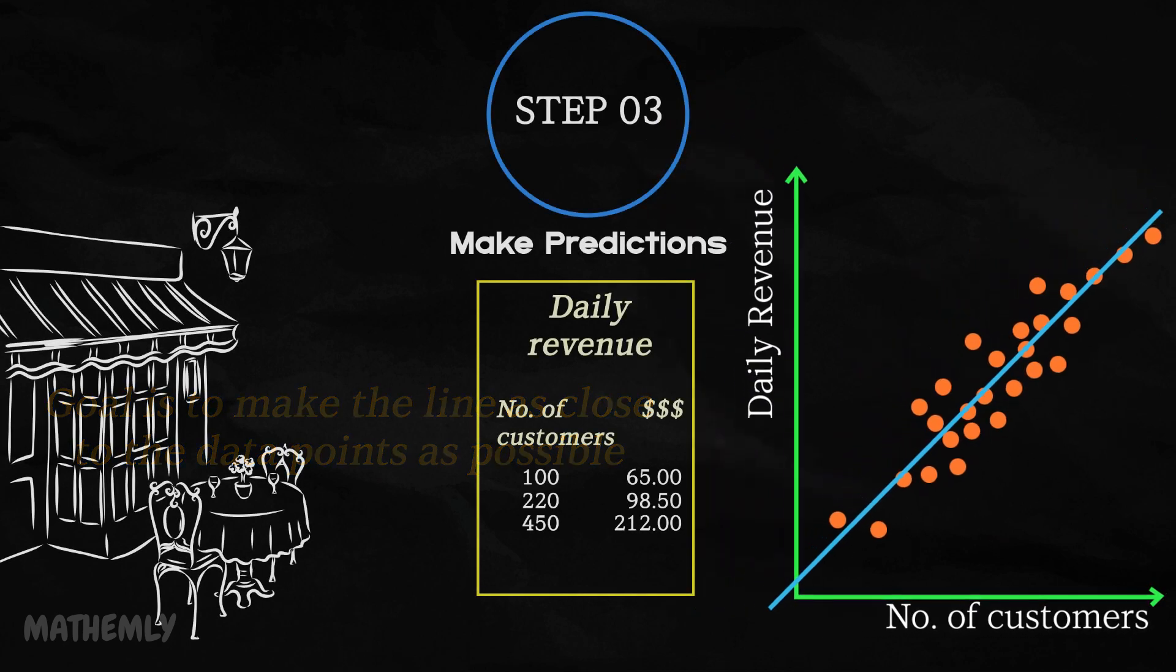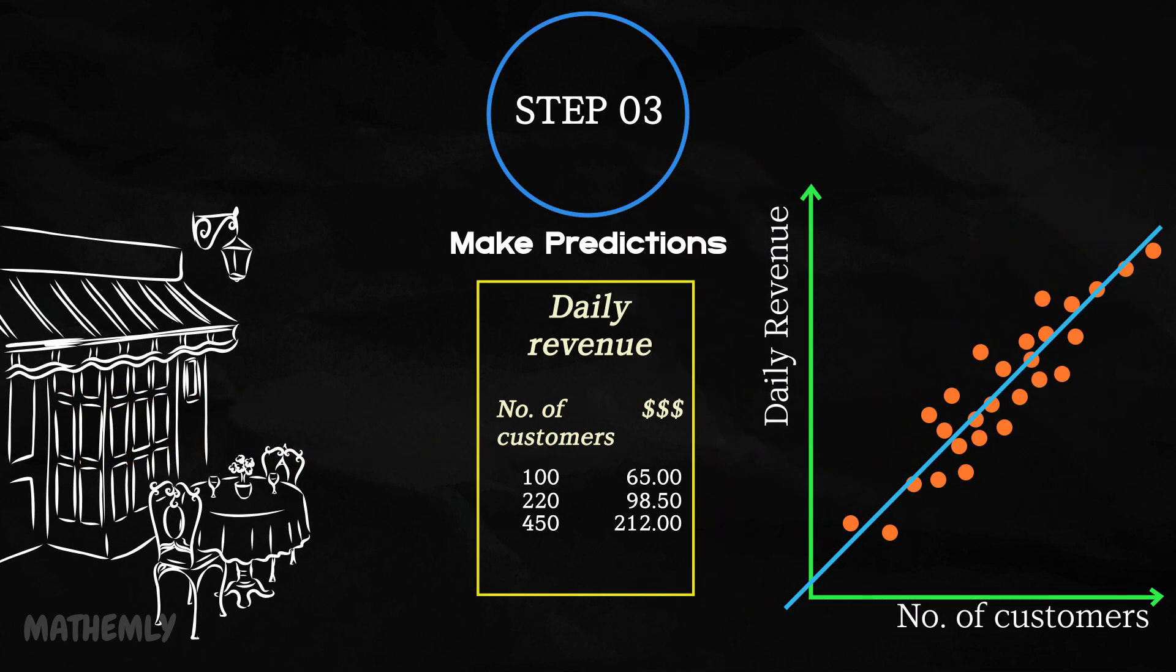Step 3, Make predictions. Now, the magic happens. Once the line is ready, you can use it to estimate your daily revenue based on a new input, like the number of customers you expect tomorrow. For instance, if you anticipate 150 customers, the line will give you a predicted revenue value. This makes simple linear regression a practical and powerful tool for forecasting and planning.